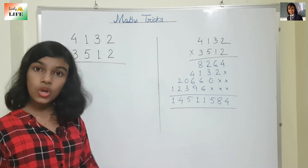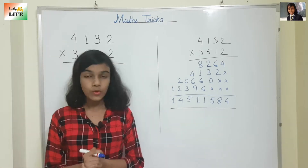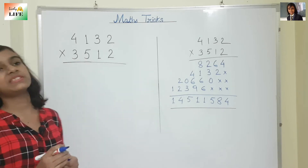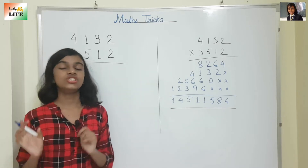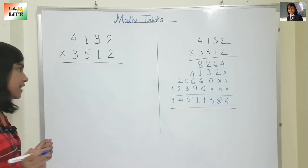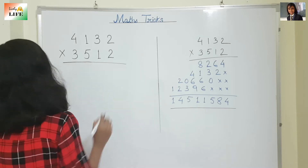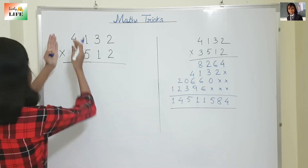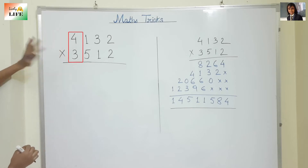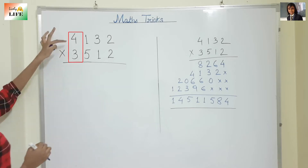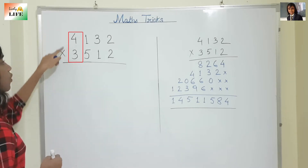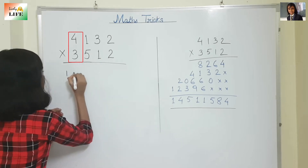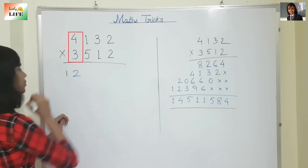So it will take so much time, but I am going to tell you a trick by which you can do 4-digit multiplication in seconds. So let's begin. First, we are going to multiply the thousands digits — that means 4 and 3. 4 threes are 12, so we are going to write 12.